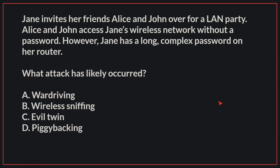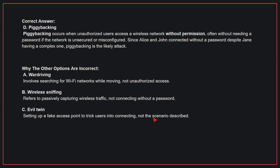Jane invites her friends Alice and John over for a LAN party. Alice and John access Jane's wireless network without a password. However, Jane has a long, complex password on her router. What attack has likely occurred? The correct answer is D, piggybacking. Piggybacking occurs when unauthorized users access a wireless network without permission, often without needing a password if the network is unsecured or misconfigured. Since Alice and John connected without a password despite Jane having a complex one, piggybacking is the likely attack.